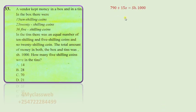Now, with this equation, we subtract 790 from both sides so that on the left we are left with 15x, and on the right we are left with 210.